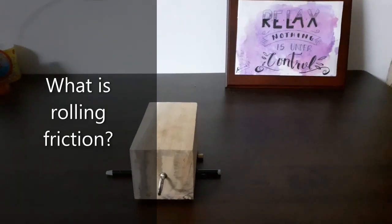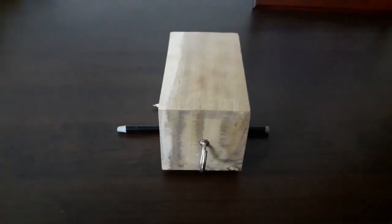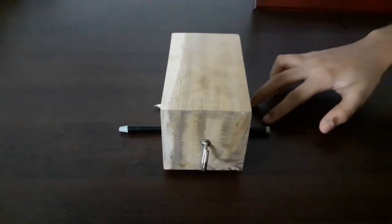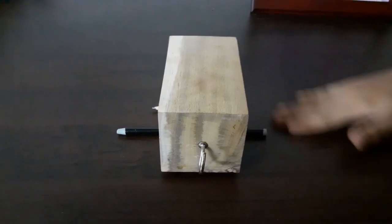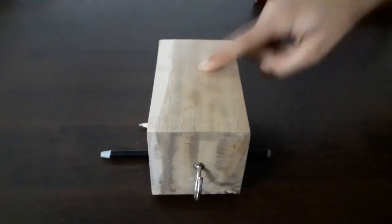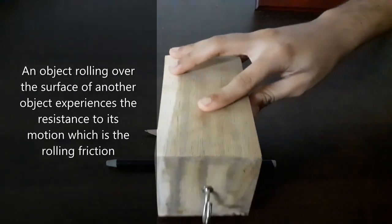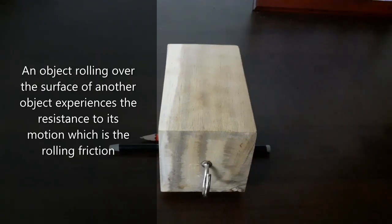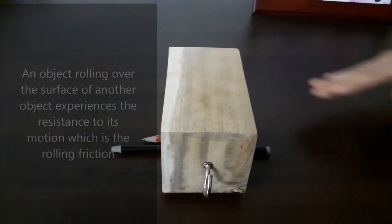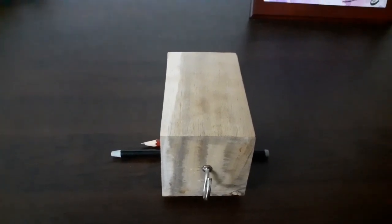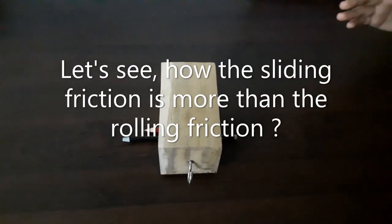Let us see what is rolling friction. You can see the block is placed on these two pencils and it is not directly resting on the table. When one body rolls over the surface of another body, the resistance to its motion is nothing but rolling friction.